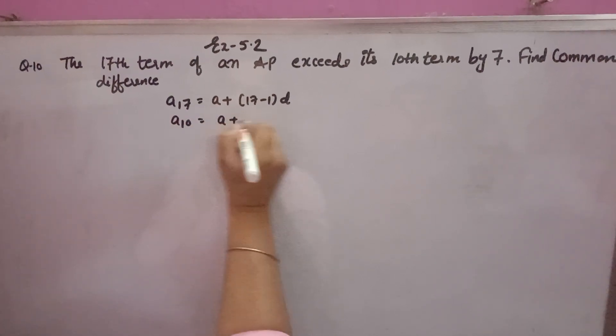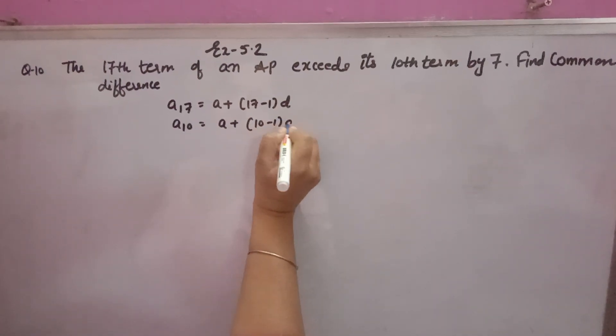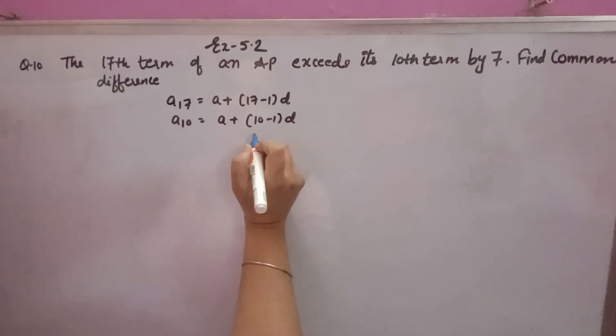The 10th term will be A plus 10 minus 1 into D. Again, A is the first term and D is the common difference.